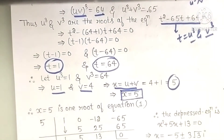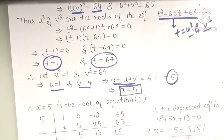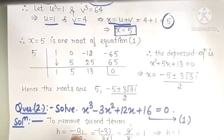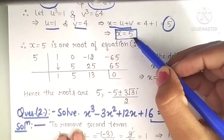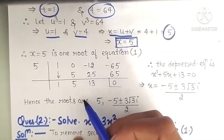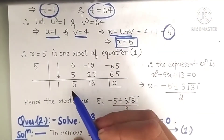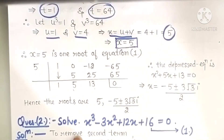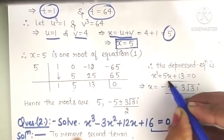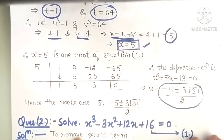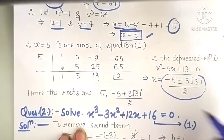When we get one root, we apply synthetic division and convert the cubic into a quadratic. We got a root of 5. The depressed equation is x² + 5x + 13 = 0. We apply the discriminant formula to find the remaining two roots. So the cubic equation has three roots: one root is 5, and two more come from x² + 5x + 13 = 0.